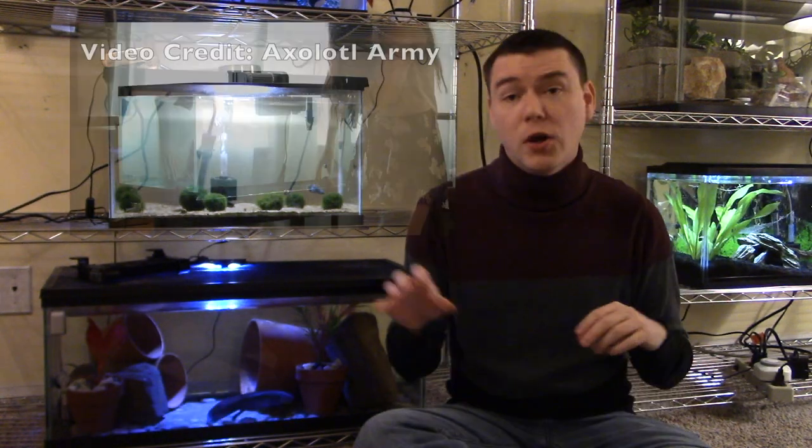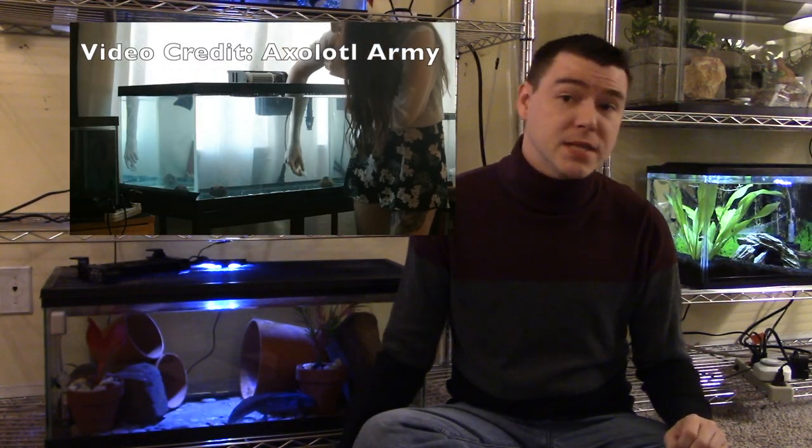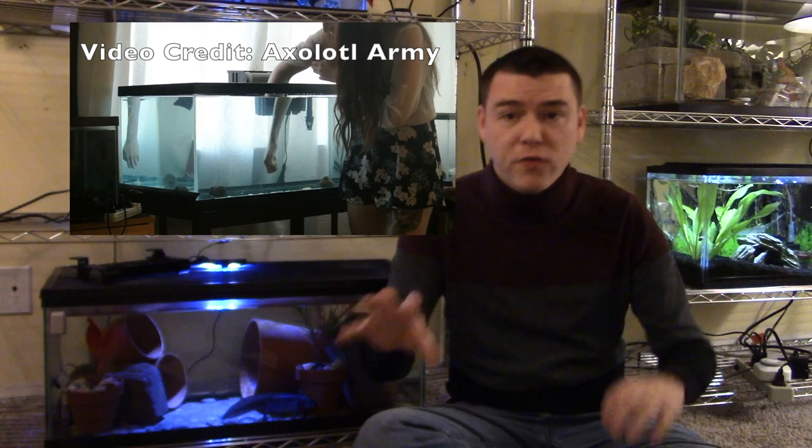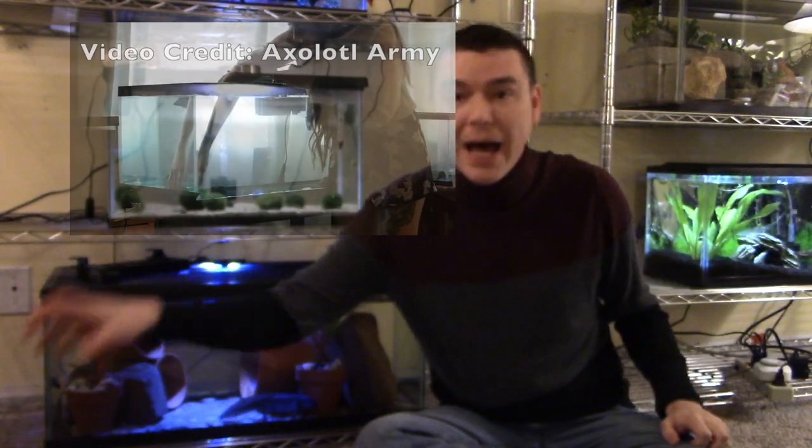They provide a lot of really good grip for your axolotl to hold on to and move around on. So they're not going to be slipping and sliding and struggling for grip like they would potentially in a bare bottom tank. Large rocks also look really nice. They look really cool in an axolotl tank. You can also just scatter large rocks around on a bare bottom tank so the axolotl can go from grippable spot to grippable spot. Also, if you cover the entire tank in large rocks, you can pour some sand down as well to fill in the gaps in between the rocks.